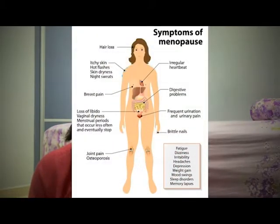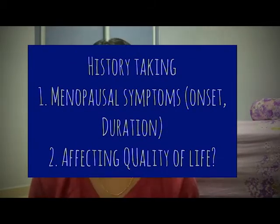Next, take a short, brief history to find out whether the patient has any risk factors or comorbidities that can affect your management plan. Find out what menopausal symptoms they are experiencing, such as hot flushes, night sweats, difficulty sleeping, low mood, and vaginal dryness. Also ask about the onset and duration of their symptoms.